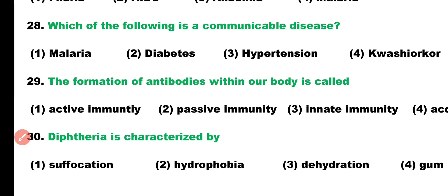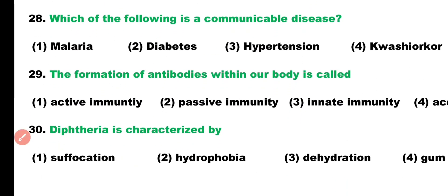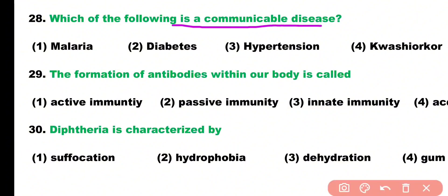Question number twenty-eight: which of the following is a communicable disease? Options: malaria, diabetes, hypertension, or kwashiorkor. Correct answer is option one — malaria is a vector-borne communicable disease caused by Plasmodium and transmitted by the female Anopheles mosquito.